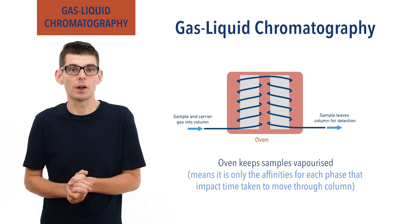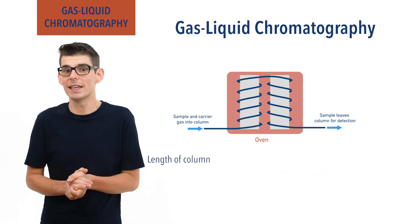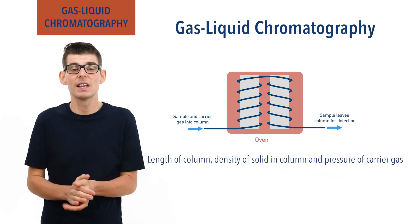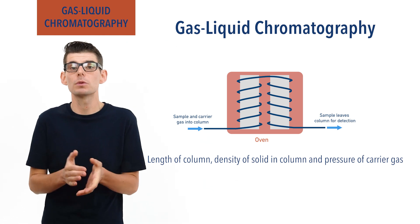By changing the length of the column, the density of solid in the column and the pressure of the carrier gas, the retention time of a sample can be altered.